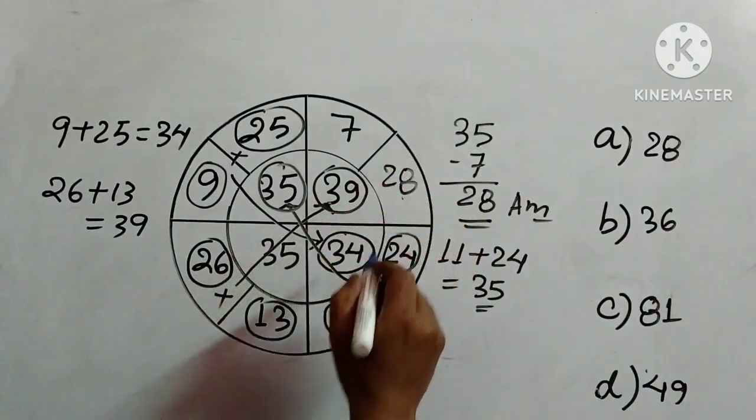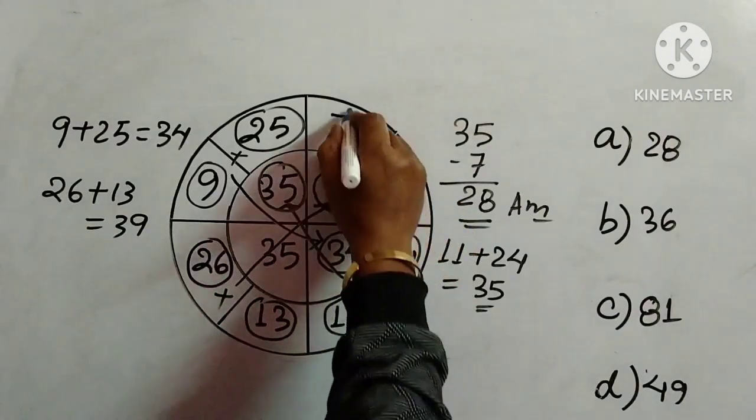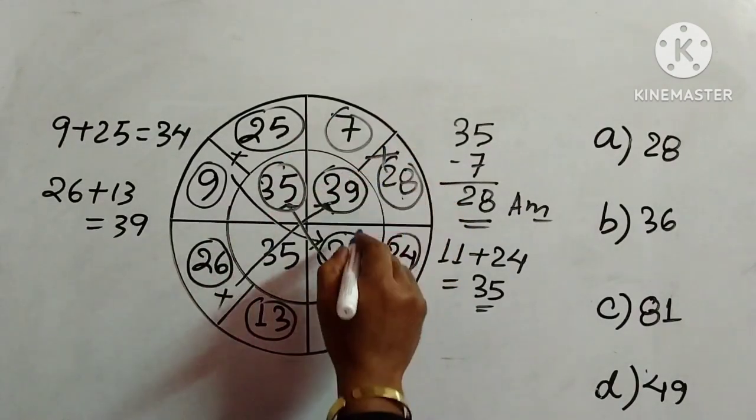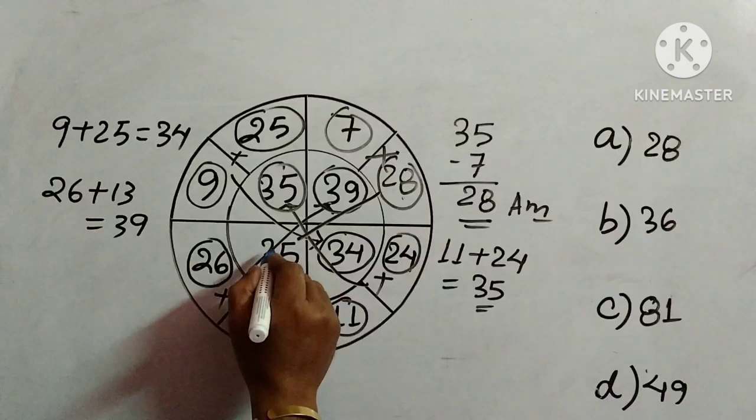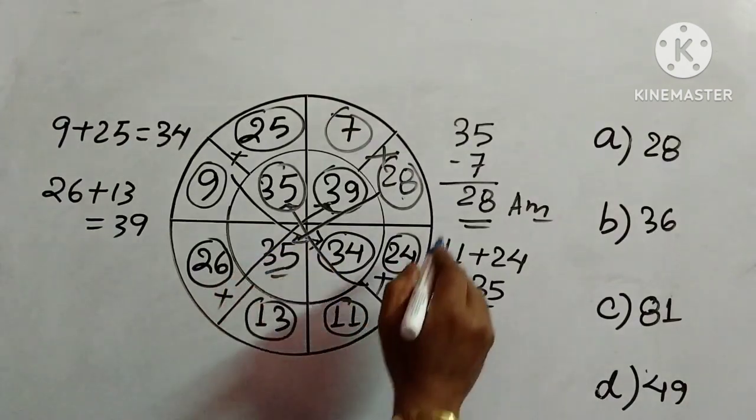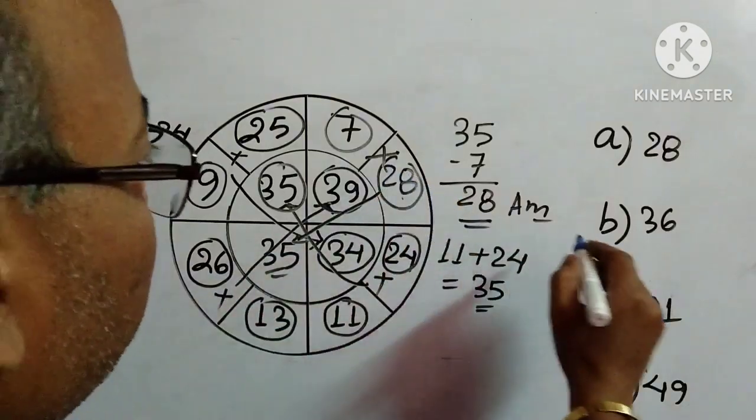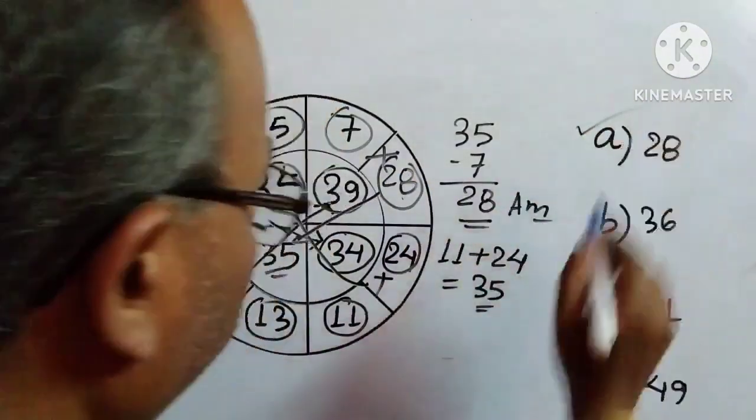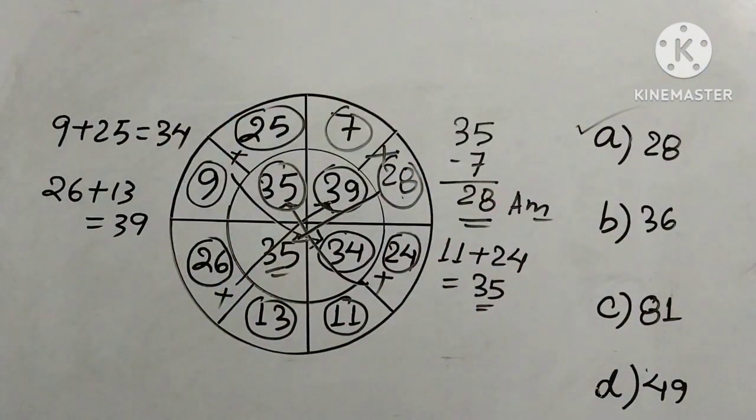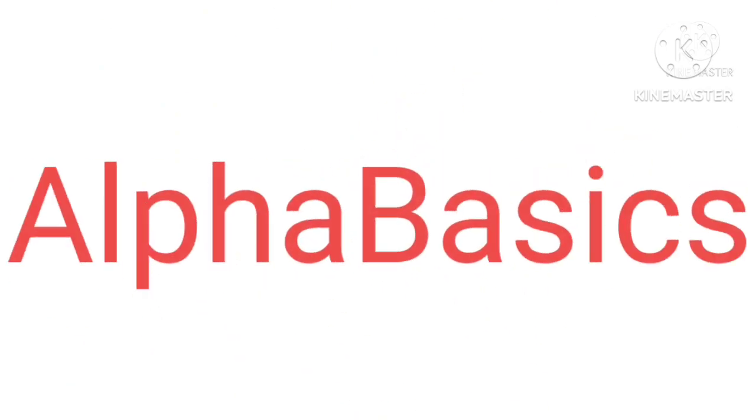Now check: 28 plus 7 comes to 35, which is given over here. So we have to write 28 in the box. The answer is option A. That's all for today. Hope you have understood. Thanks for watching.